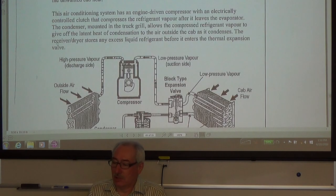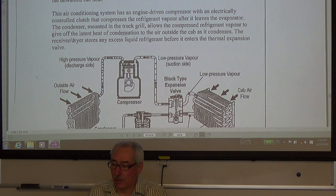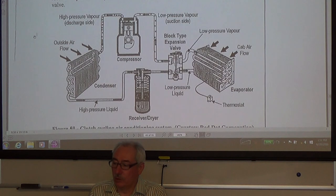This air conditioning system has an engine driven compressor with an electrically controlled clutch that compresses the refrigerant vapor after it leaves the evaporator. The condenser mounted in the truck grill allows the compressed refrigerant vapor to give off the latent heat of condensation to the air outside of the cab as it condenses. The receiver dryer stores any excess liquid refrigerant before it enters the thermal expansion valve.